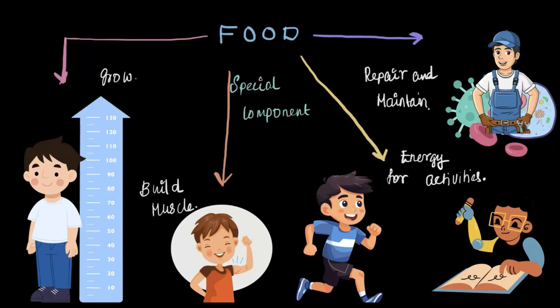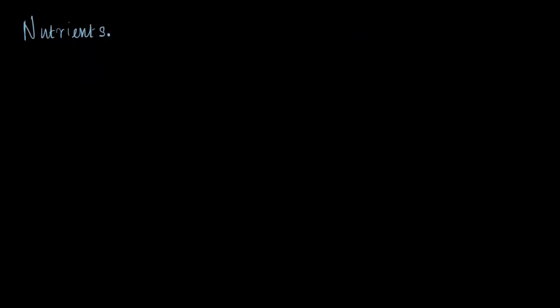These special components of food are called nutrients. Nutrients are the special components in food responsible for growth, providing energy, repairing and maintaining the body, and building muscles.